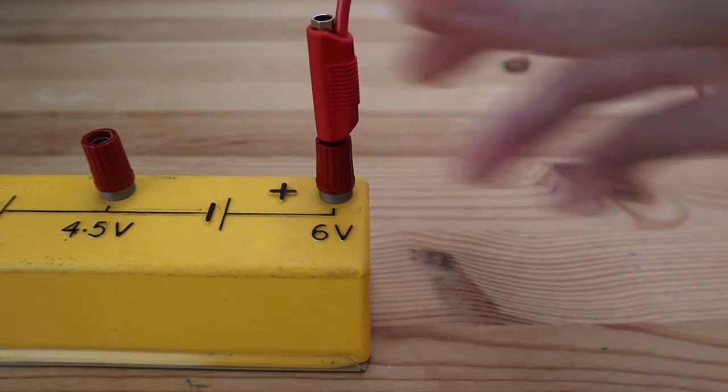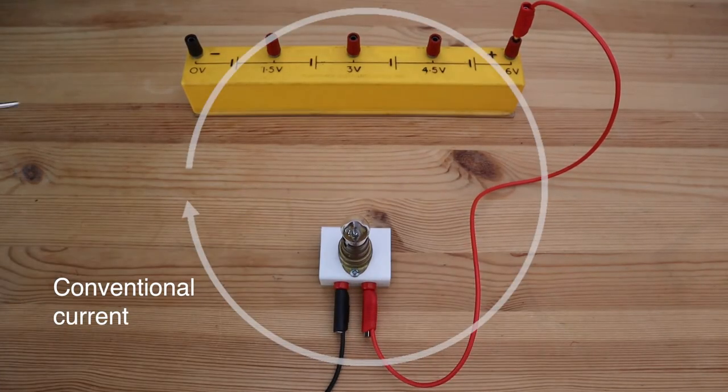Conventional current goes from the positive terminal of the battery to the negative terminal of the battery.